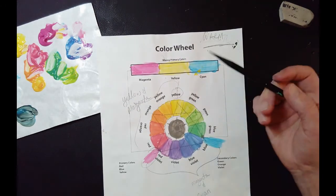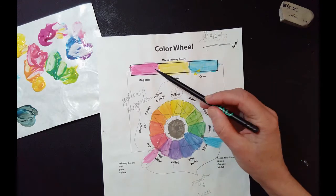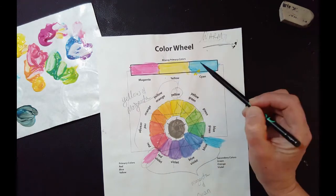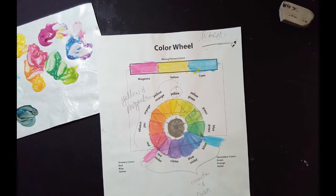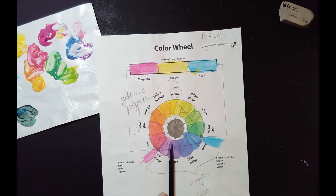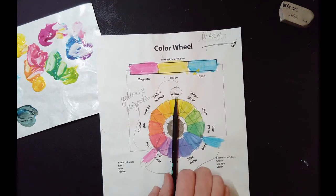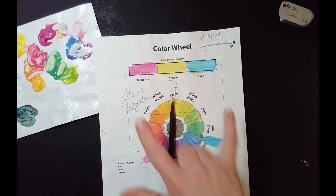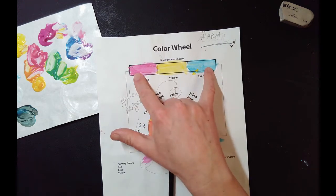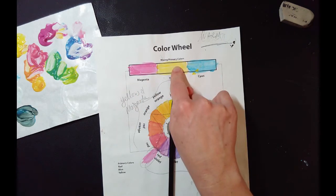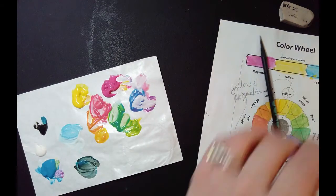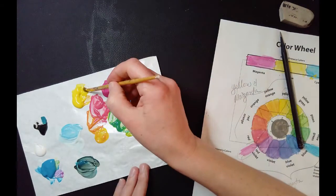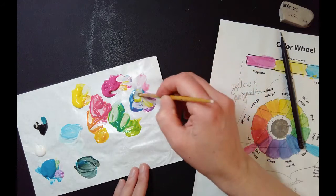Another way is if I'm looking at what magenta and cyan make, they make the violets. So if I just put my pencil down here on the violet and I shoot it across, look what's there, yellow, right? These two make violet, the one that's missing is yellow. So if I start off with a violet puddle, I can make neutral by adding yellow into it and I will make some mud.